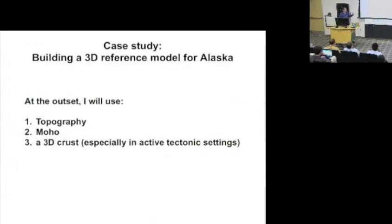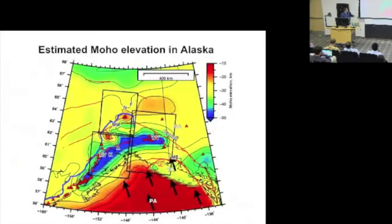So case studies, building a 3D reference model for Alaska. That is to say, at the outset, I believe in, there's topography, there's a Moho, which enough studies have illuminated even in Alaska, and there's three-dimensional crust, especially in active tectonic settings, which happens to be where you find a lot of seismic instrumentation not surprisingly. To integrate this information at the outset, this is a Moho map. This is about 1,000-kilometer scale. That's Fairbanks, Anchorage. This is the Yakutat Block. This is the Denali Fault. And this is a representation of eight data sets stitching together to show Moho variation goes from 10 to 50 kilometers or so. Those are big variations.